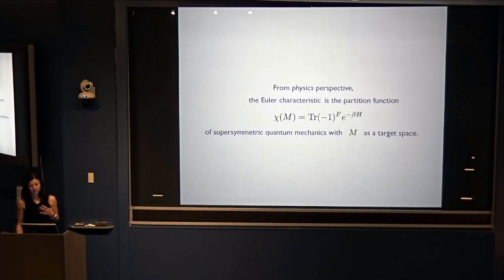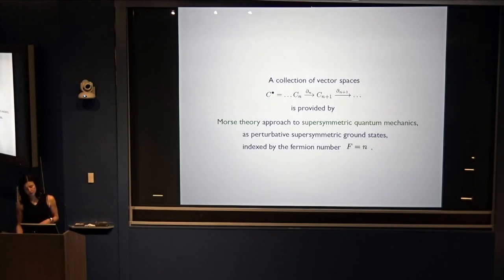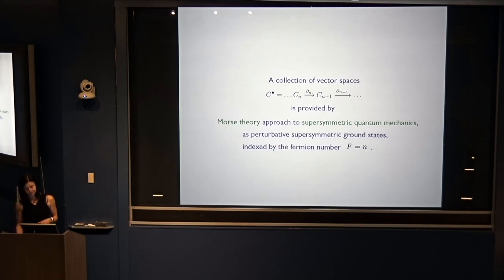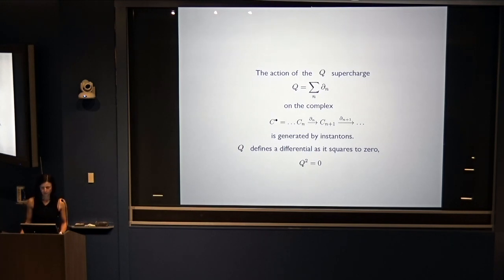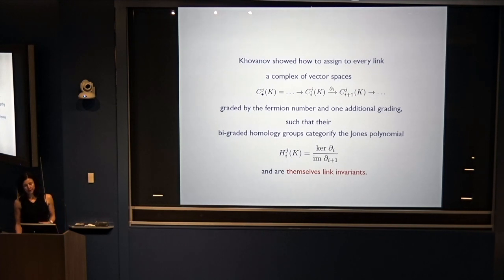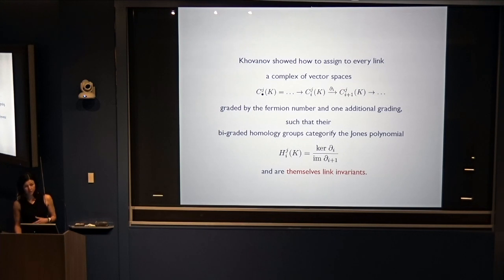From a physics perspective, the Euler characteristic is the partition function of supersymmetric quantum mechanics with the manifold M as a target space. The collection of vector spaces is provided by Morse's approach to supersymmetric quantum mechanics as perturbative supersymmetric ground states indexed by the fermion number. The action of the supercharge on this complex is generated by instantons, and Q defines a differential because, as a supercharge, it squares to zero. Khovanov showed that one can assign to every link a complex of vector spaces graded by the fermion number and one additional grading, such that the bigraded homology groups categorify the Jones polynomial and are themselves link invariants.